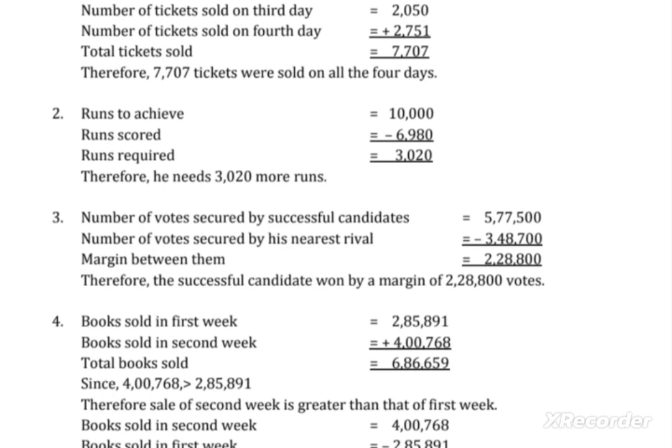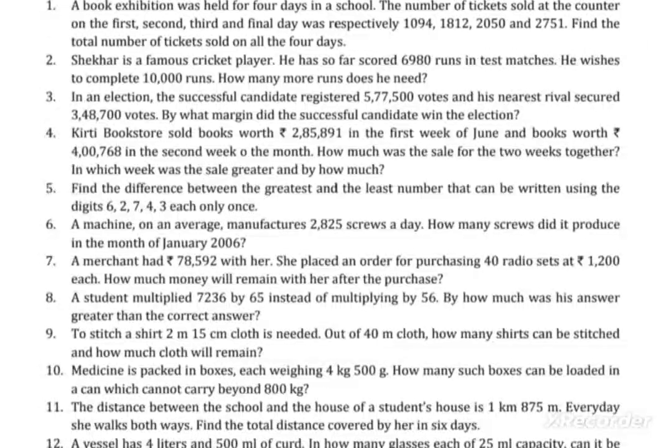The required answer is 7707 — just add all four numbers. The second question: Shekhar is a famous cricket player and he has so far scored 6980 runs in test matches. He wants to complete 10,000 runs, but he still needs more runs.